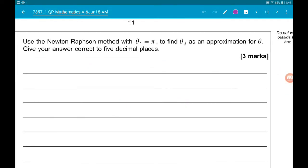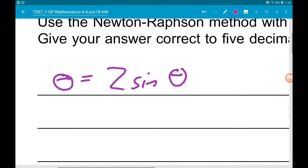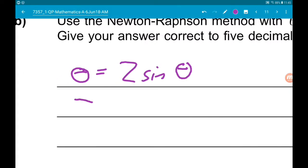Okay, then part B wants us to use Newton-Raphson with theta one is equal to pi to find theta three as an approximation for theta. Give your answer correct to five decimal places. Okay, so at the moment all that we know about theta is that theta is equal to two sine theta.